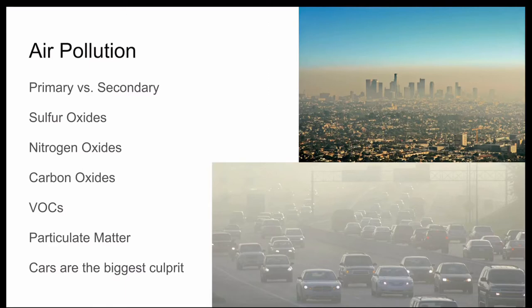Secondary pollutants form when primary pollutants combine with other substances in the air, such as water vapor. While some pollutants enter the atmosphere through natural processes like volcanoes or pollen, most air pollutants come due to human activities.